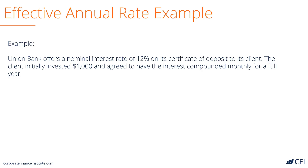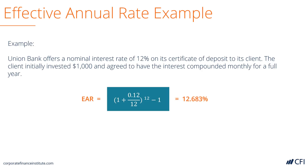Let's see what the effective annual rate is. If we plug it into our formula, we take 1 and add to it the nominal rate of 12%, divided by the number of compounding periods, which is 12, all raised to the power of the number of compounding periods, which is 12, minus 1. We get an effective annual rate of 12.683%, which is obviously higher than the nominal 12%.